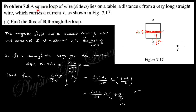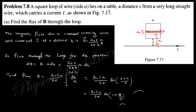Next: a square loop of side A is placed at a distance S from a long straight wire carrying current I. Find the flux of B through the loop. The magnetic field at distance x from the wire is μ₀I/(2πx). The flux through a small strip of width dx is dΦ = B·A·dx = μ₀I·A·dx/(2πx). Integrating from S to S+A, the total flux is μ₀IA/(2π)·ln[(S+A)/S].